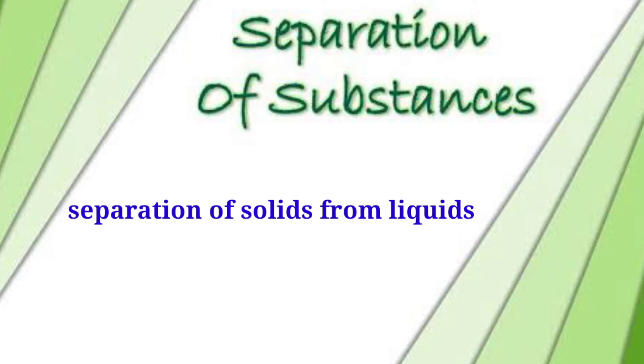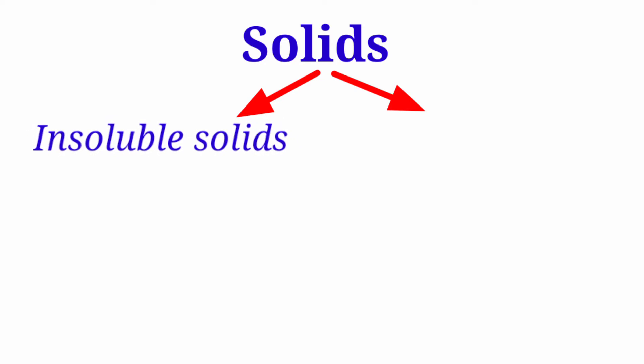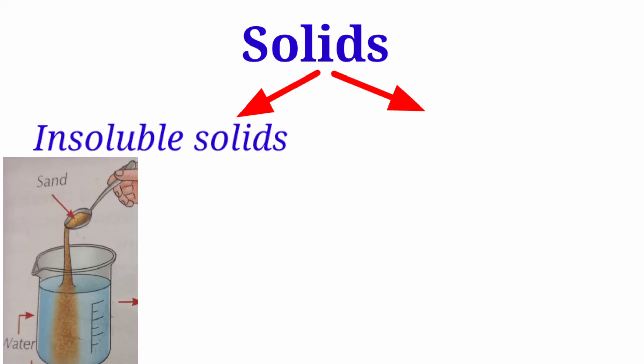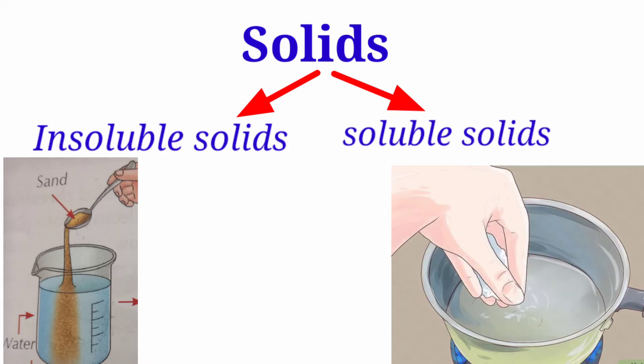There are two kinds of solids. First, that which is insoluble in liquid — like sand, which is insoluble in water. Second, that which is completely soluble in liquid — like salt, which is completely dissolved in water. Let's start with the separation of insoluble solids from liquids.